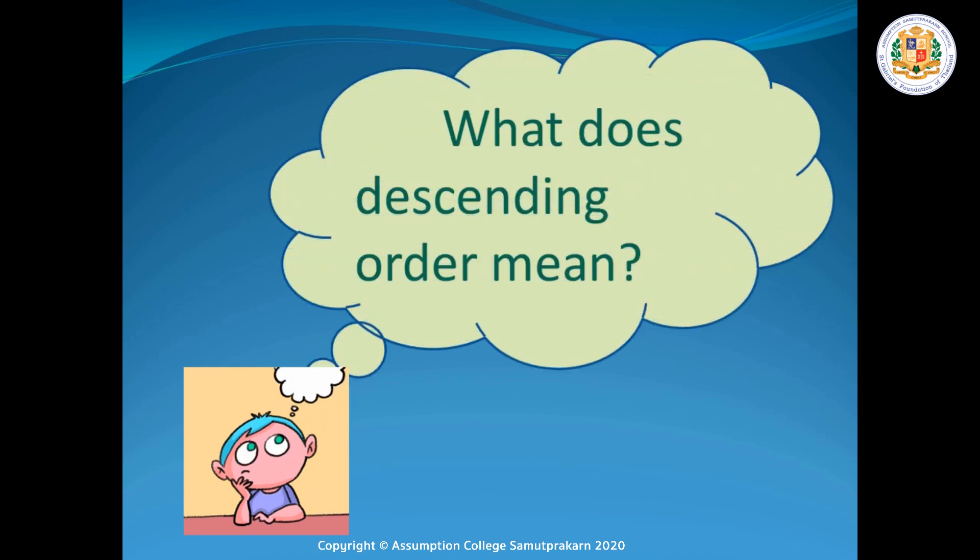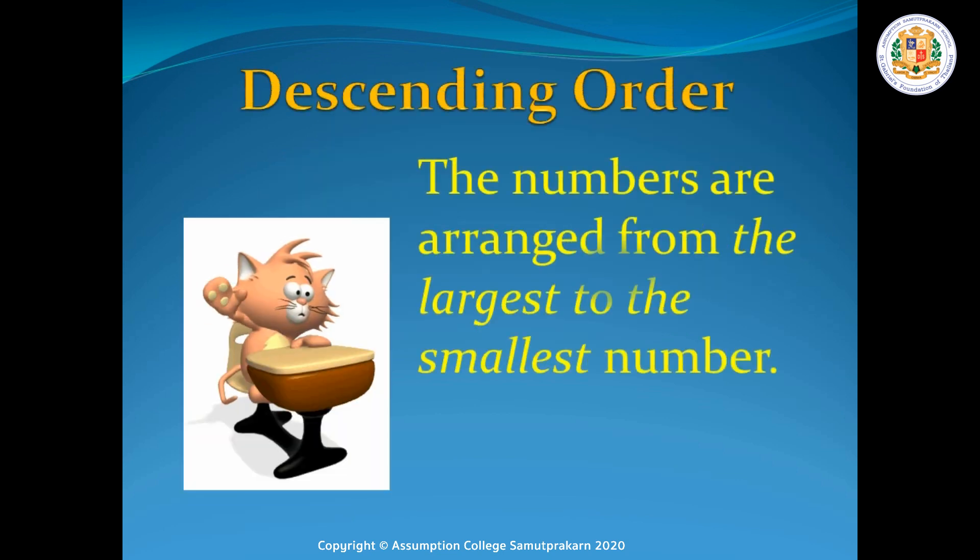It is the opposite of ascending order. What does descending order mean? The key word here is descending. Repeat after me. Descending. Descending order. The numbers are arranged from the largest to the smallest number. It is the opposite of ascending order.